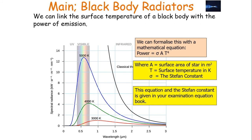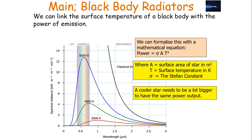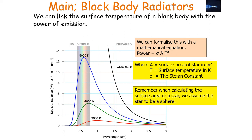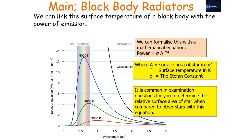Stefan's law shows that the power output of a star is directly proportional to T to the power of 4 and the surface area of the star. This means a cooler star needs to be much bigger to have the same power output. When calculating the surface area of a star, we assume the star to be a sphere, so the surface area equals 4πr². Another term for power is luminosity, so Stefan's law will also determine the luminosity of a star. This equation and the Stefan constant are given to you in your examination equation book.